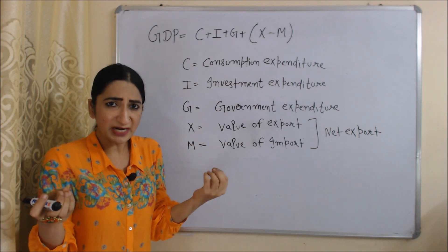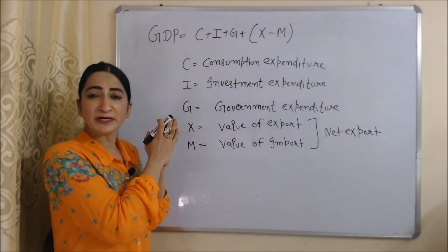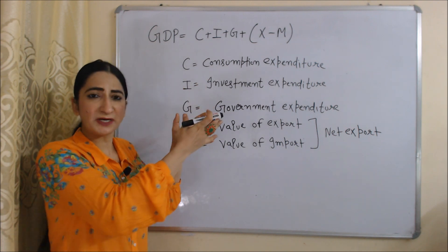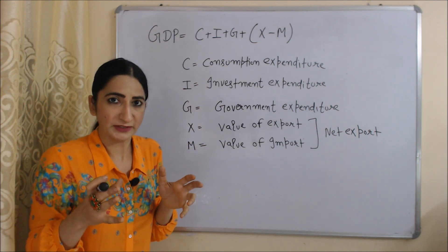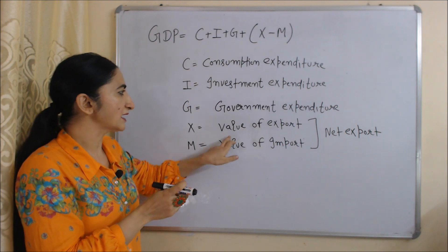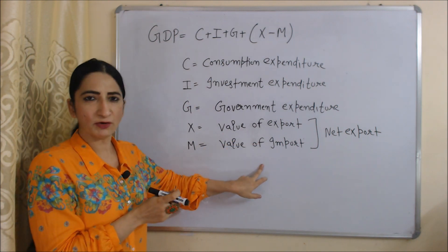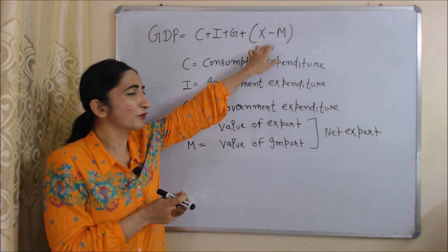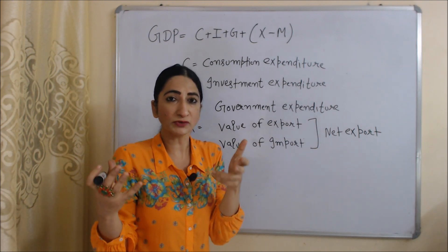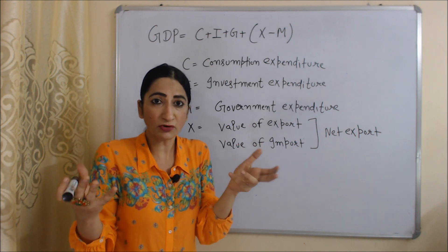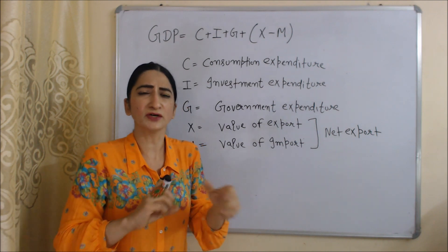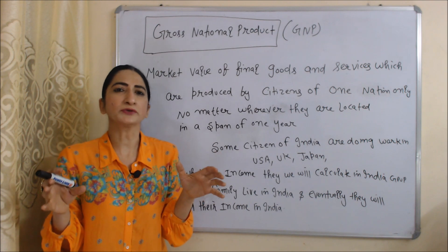G is government expenditure — as we know, the government also does some expenditure for the welfare of society. X means value of export and M means value of import. When we subtract M from X it becomes net export. Net export means we also include exporting goods in GDP because exporting goods are also the production of our country, and in GDP we include everything which is produced within our country, no matter who is producing.